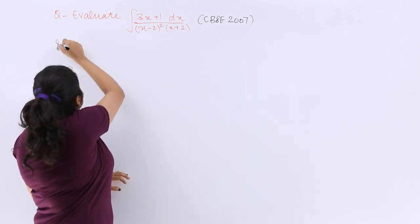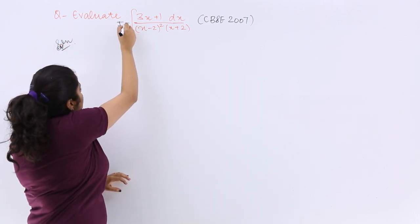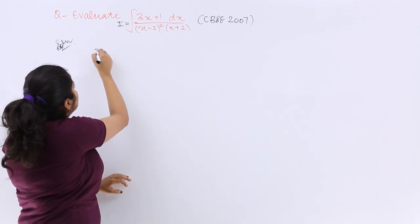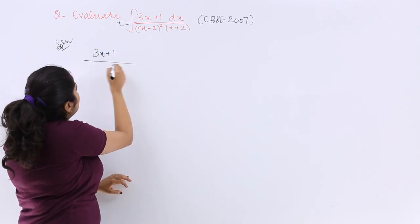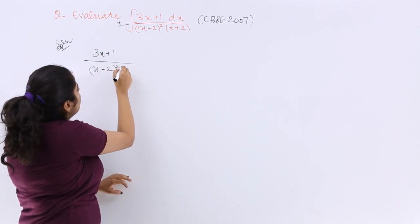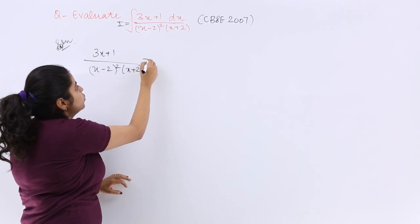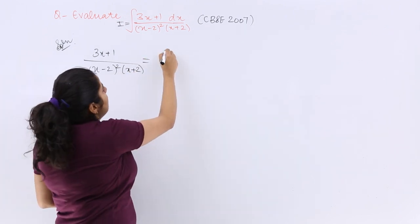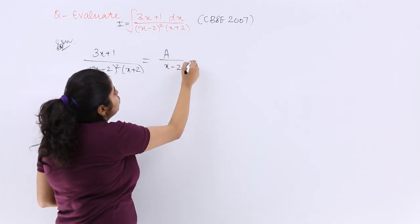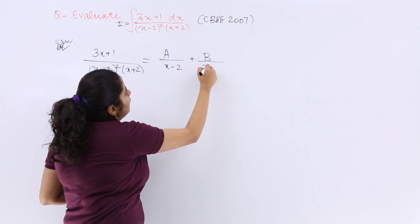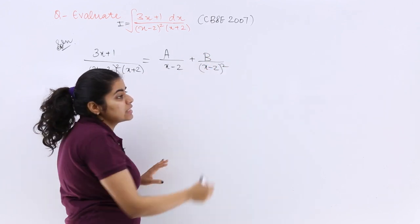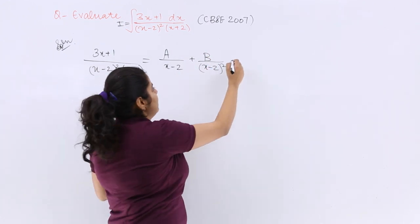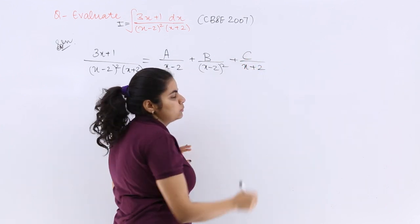So I write solution. If my question is 3x plus 1 upon (x minus 2) whole square multiplied by (x plus 2), it is equal to A upon (x minus 2) plus B upon (x minus 2) whole square, because this is what we studied for whole square, plus C upon (x plus 2).